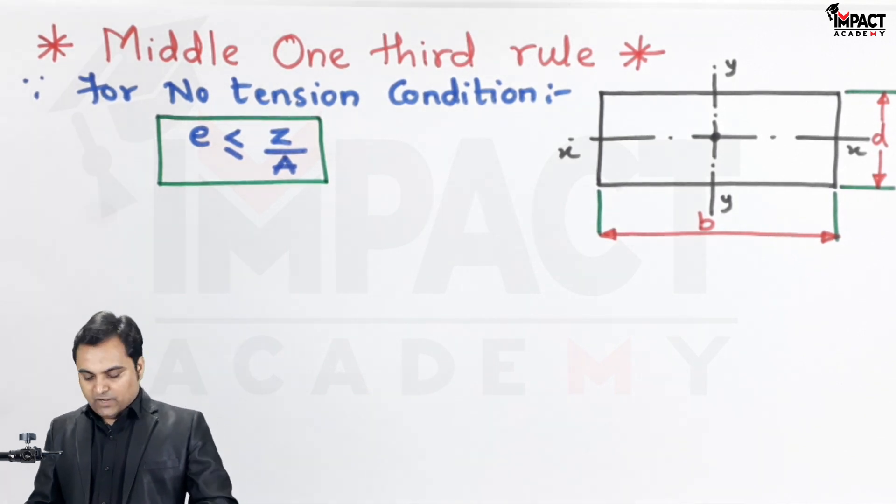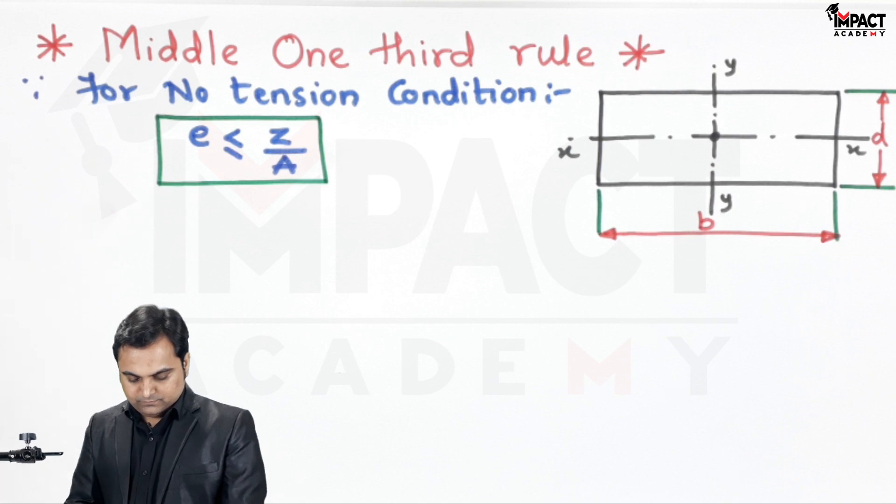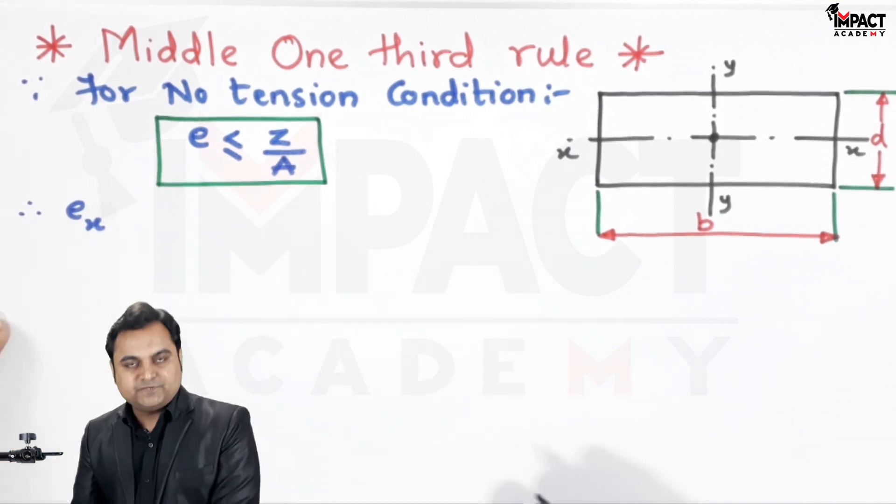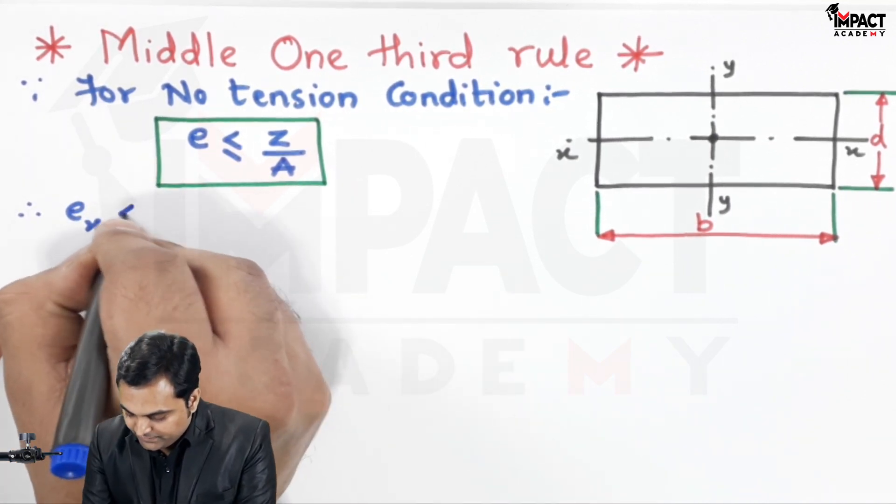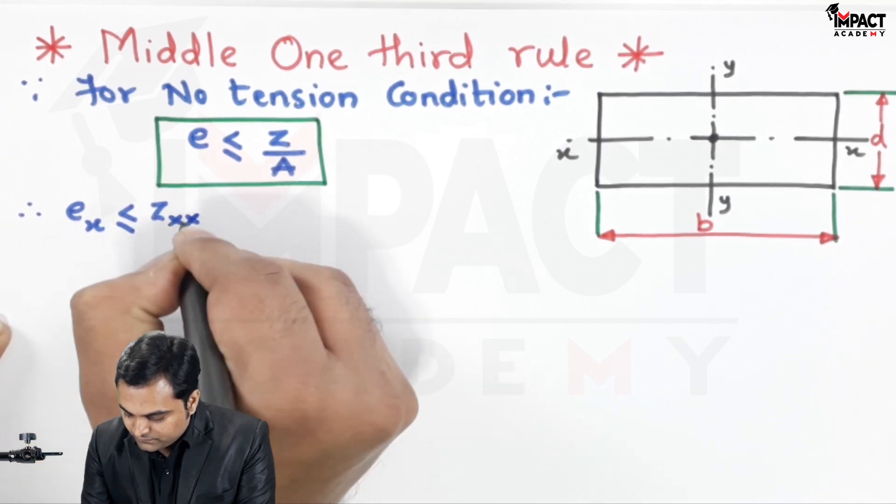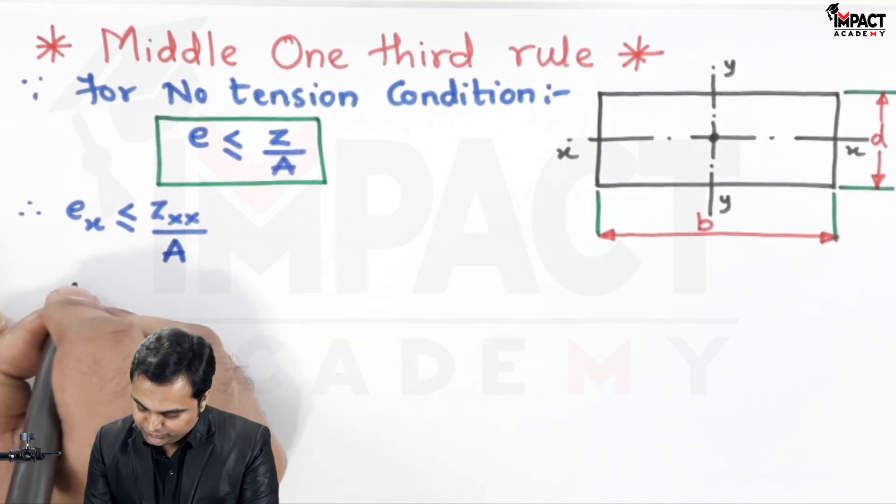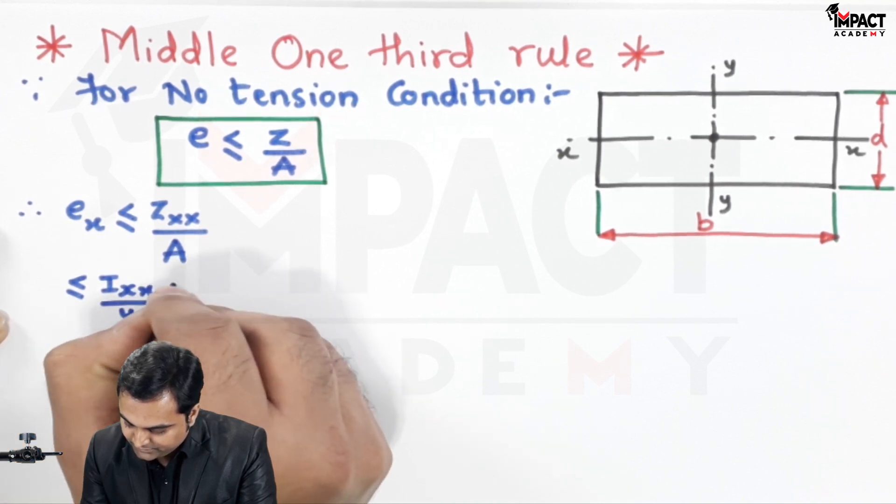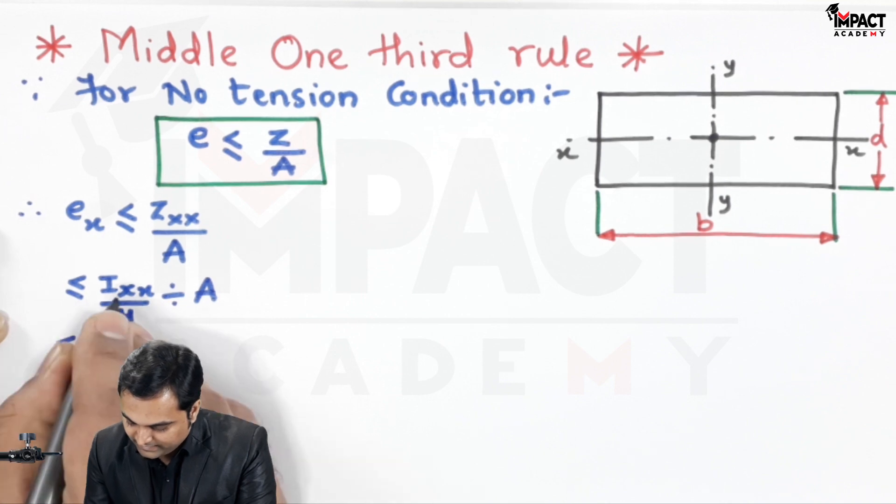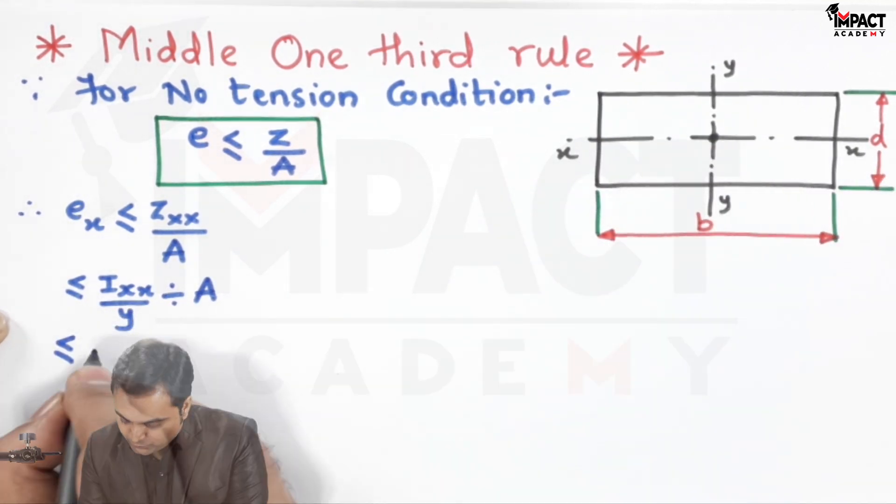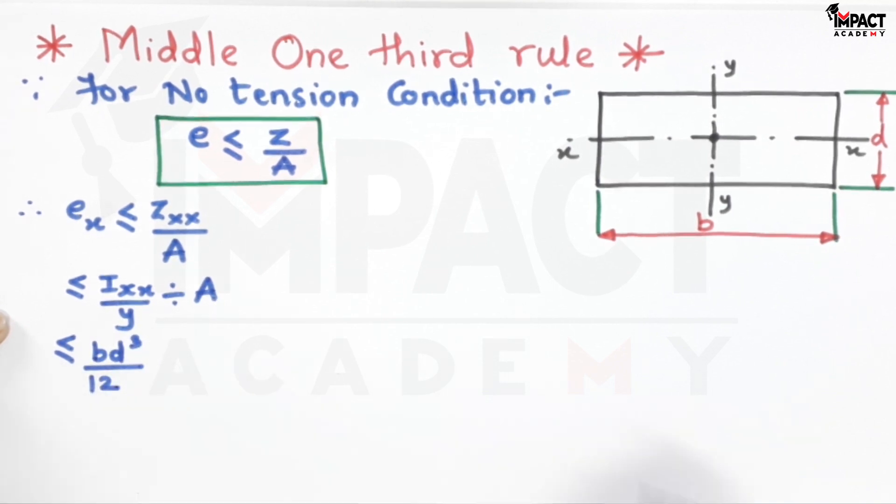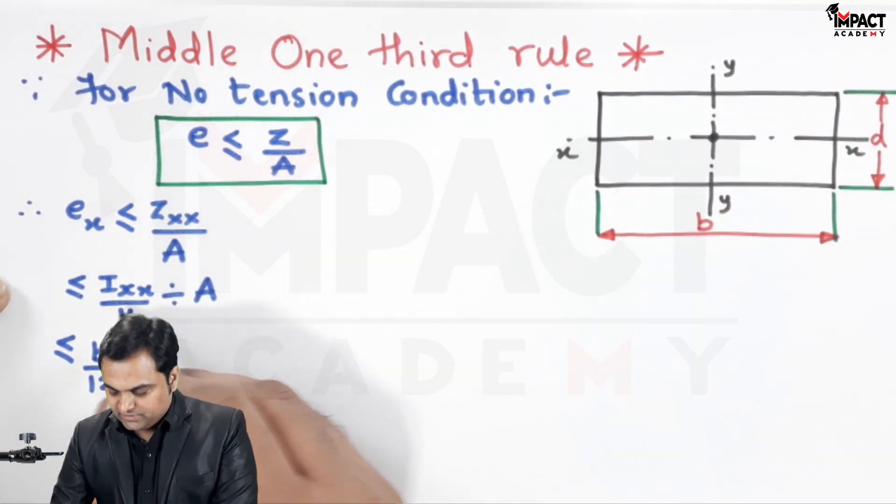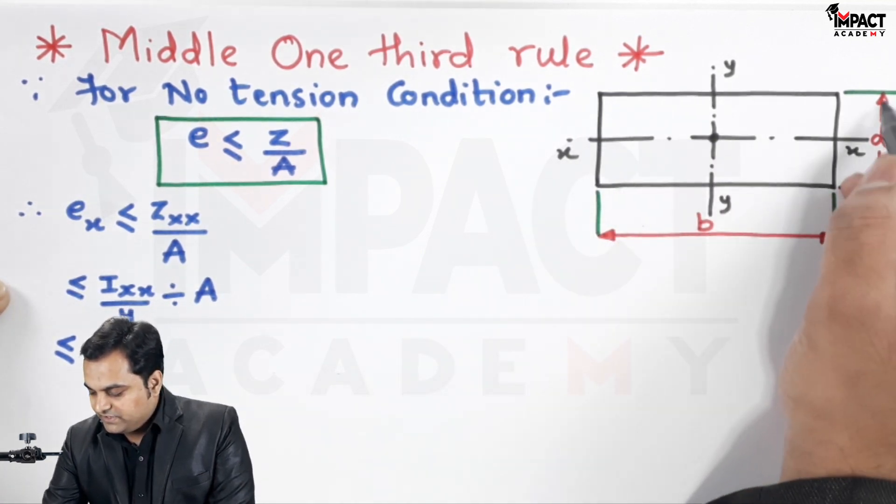First I will find ex, the eccentricity with respect to x-axis. That would be zxx/area. Here zxx is ixx/y divided by area. For a rectangular section, ixx is bd³/12, and y is d/2 because we're taking the moment of inertia about the x-axis.